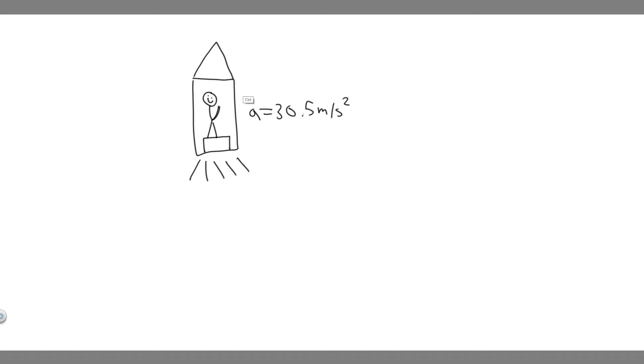As usual, draw what's going on. So we have this rocket, and we know it's going to be accelerating at 30.5 meters per second squared. And since we're going to be dealing with forces in this problem, it's always good to draw a free body diagram.